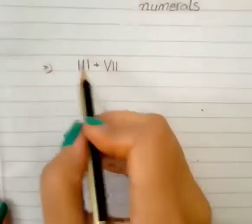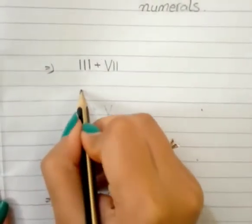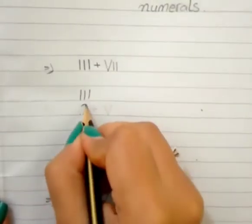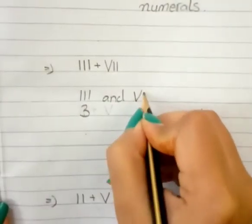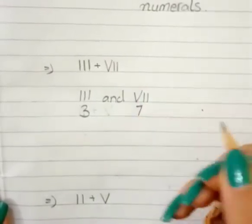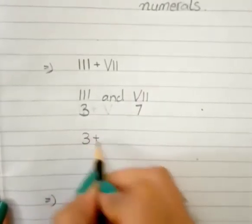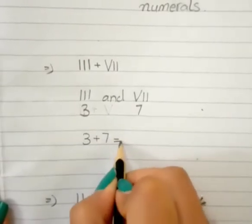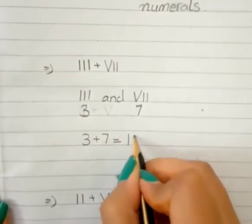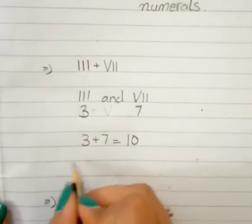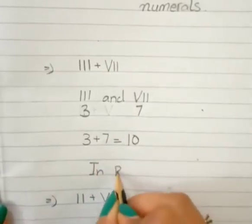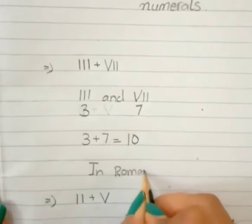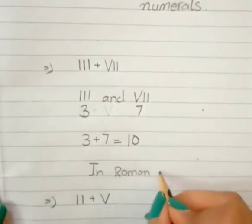Okay, now in Roman numerals, this is number three (III) and this is number seven (VII). The next step is three plus seven equals ten. And we will have to write it in Roman numerals.